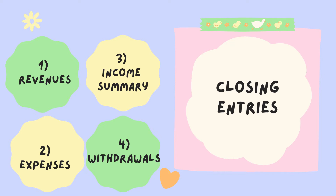We're going to close revenues, expenses, and withdrawals, but we're going to journalize four closing entries to close those three accounts. The first one to close revenues, the second one to close expenses, the third one to close income summary, and the fourth one is to close withdrawals. Let's see how we're going to close those accounts.